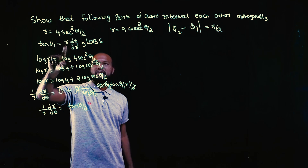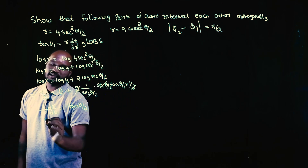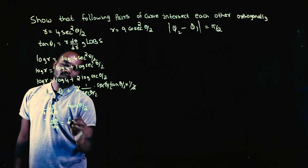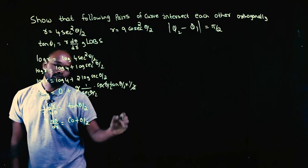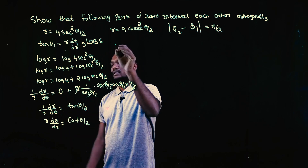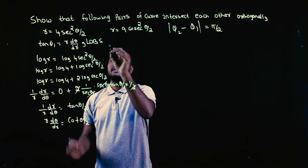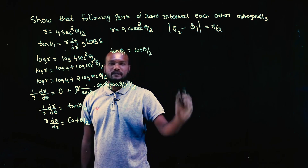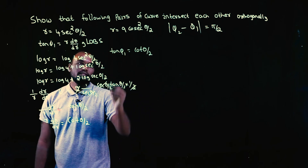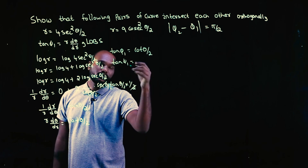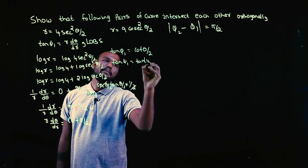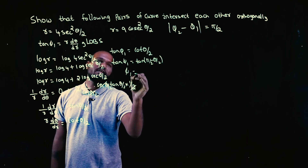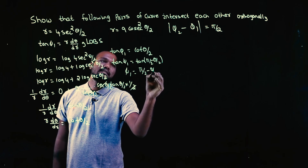I am not interested in (1/r); I am interested in r dθ/dr. So flipping: r dθ/dr = cot(θ/2), since the reciprocal of tan is cot. And r dθ/dr is tan φ, so tan φ₁ = cot(θ/2). This can be written as tan(π/2 - θ/2), so φ₁ = π/2 - θ/2.